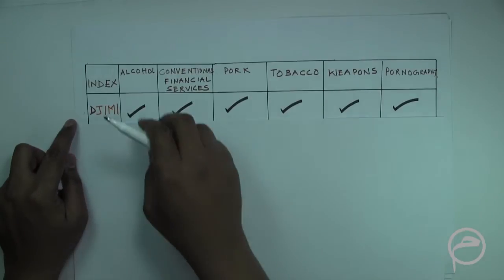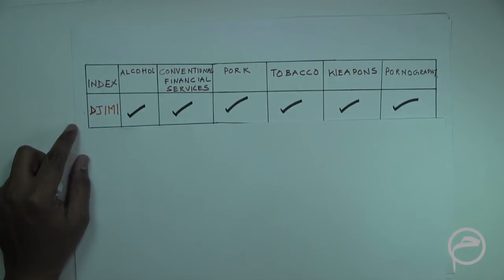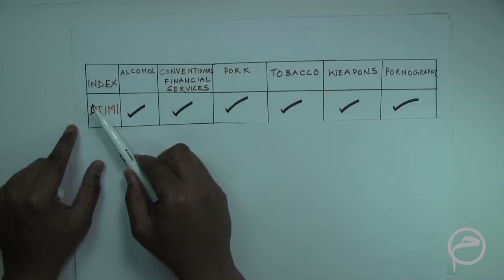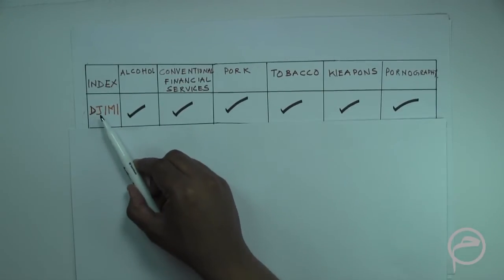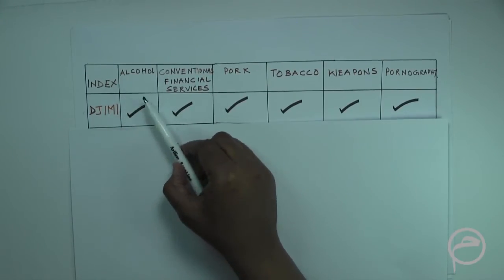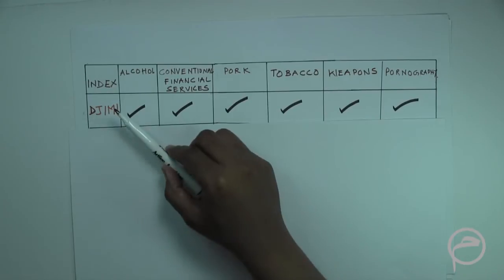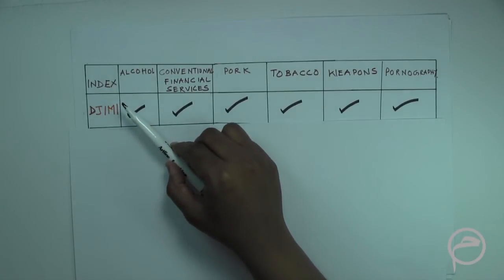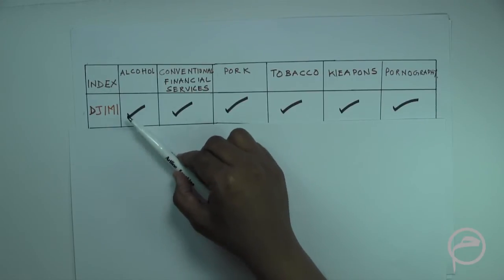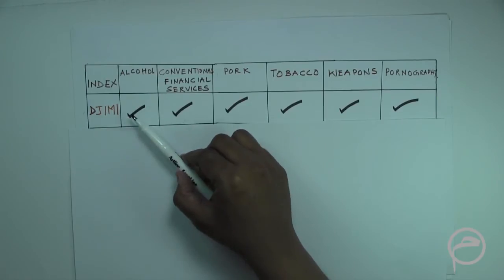The Dow Jones Islamic Market Index uses alcohol as a screening parameter, meaning that any company involved in the production and distribution of alcohol is considered non-compliant, and Islamic funds are not permitted to invest in such a company.